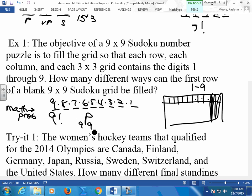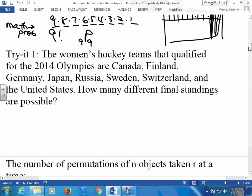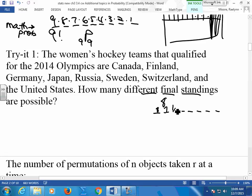So order makes a difference here. The women's hockey teams that qualified for the 2014 Olympics are Canada, Finland, Germany, Japan, Russia, Sweden, Switzerland, and the United States. How many teams qualify? Eight. So, how many different final standings are possible? Don't they all have to be included? So, one through eight. I have 8 choices, then 7, then 6, then 5, 4, 3, 2, 1. I have 8 factorial. I have 8 things taken 8 at a time.